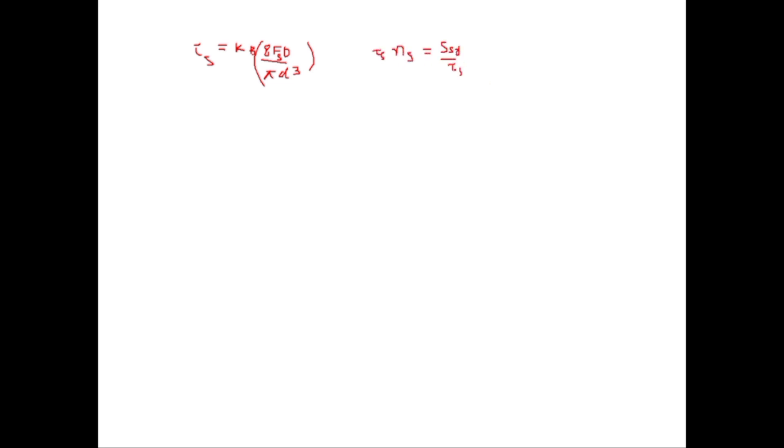So tau S is equal to SSY divided by factor of safety. So SSY divided by NS is equal to KB into 8FS D divided by pi D cube.